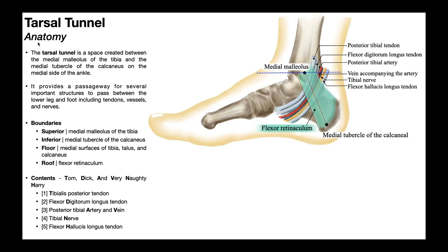So what is the tarsal tunnel? The tarsal tunnel is a space created between the medial malleolus of the tibia — that's the first black dot — and the medial tubercle of the calcaneus — that's the second black dot. It exists on the medial side of both ankles, and it provides a passageway for structures on the posterior side of the tibia and fibula to cross the ankle joint medially and end up in the foot. Those structures include muscle tendons, vessels, and nerves.